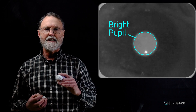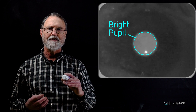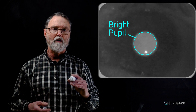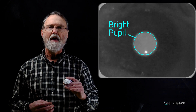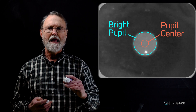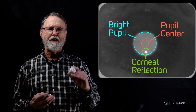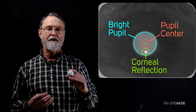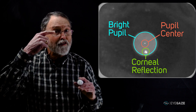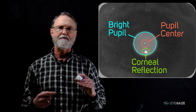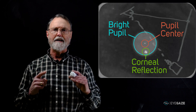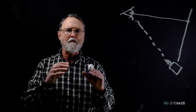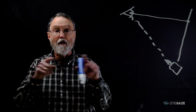This happens because the LED is mounted at the center of the camera lens. To measure where the eye is looking, there are two critical locations in the eye image. The first is the pupil center, and the second is this really bright spot called the corneal reflection. This is the reflection of the LED light off the corneal surface of your lens. And here's the key to eye tracking: as your eyeball rotates around, the relative positions of your pupil and corneal reflection move around with it.